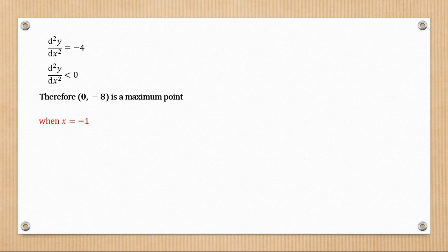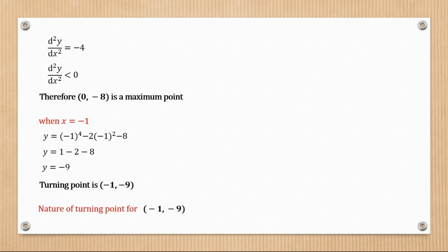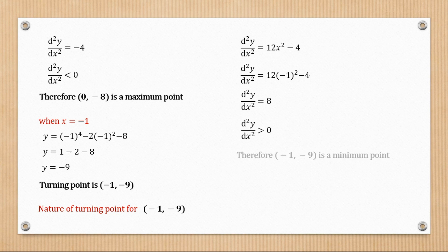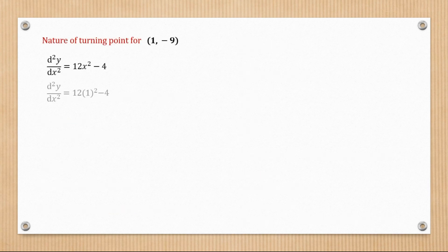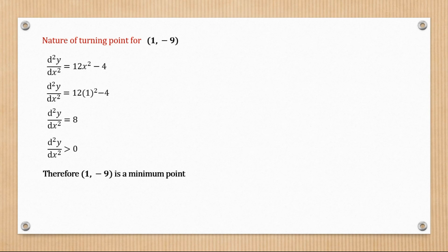When x = -1, y = -9, so the turning point is (-1, -9). The second derivative gives +8, which is greater than 0, so this is a minimum point. When x = 1, y = -9, so the turning point is (1, -9). Substituting into the second derivative gives 8, which is greater than 0, so this is also a minimum point.